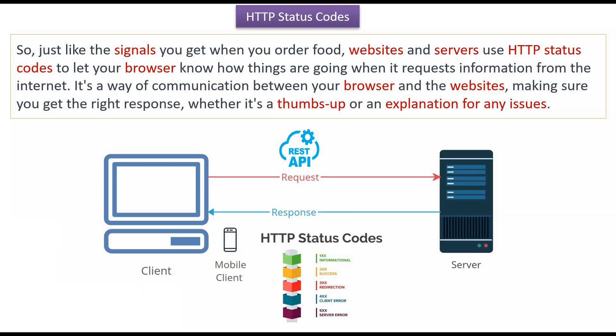Just like the signals you get when you order food, websites and servers use HTTP status codes to let your browser know how things are going when the browser requests information from the internet. It is a way of communication between the browser and the website, making sure you get the right response, whether it is a thumbs up or an explanation for an issue.